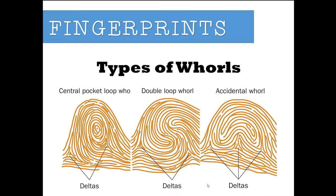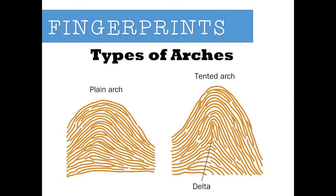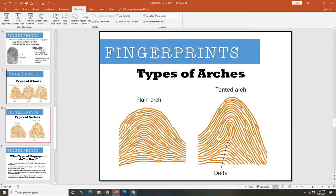Looking at this diagram, you can have different types of whorls: the central pocket loop whorl, the double loop whorl, and the accidental whorl — and you can see how the deltas are in different locations for each. You can also further break down arches, with the difference between the plain arch and the tented arch, and there are different types of loops as well.